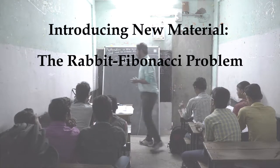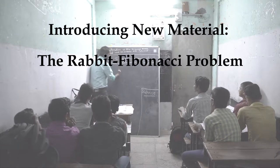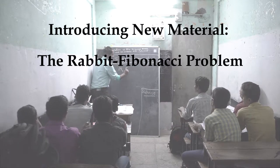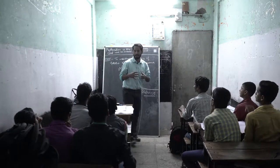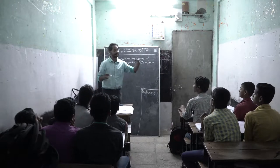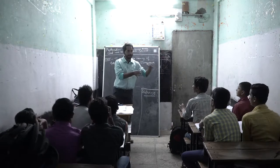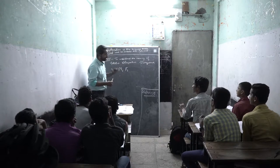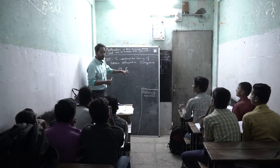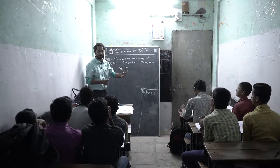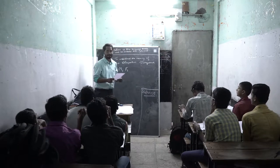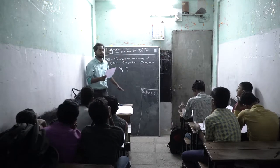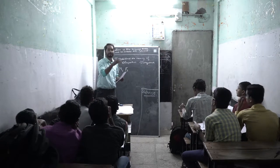Fibonacci said that in nature there is a pair of rabbits — let's call them M1 and F1. When they come together, they can reproduce only at the end of the second month. After the second month, for every subsequent month this new pair will keep reproducing babies. What Fibonacci asked is: can you find, at the end of six months or one year, how many pairs of rabbits will there be? Try to name the rabbits otherwise you will get confused.